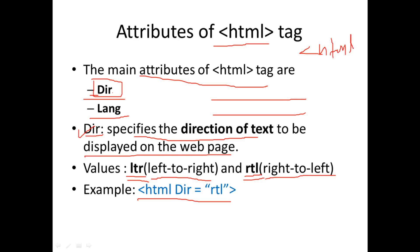In the HTML tag's angular bracket, we add the attribute. If the HTML attribute is dir, then we write dir equal to a value. For example, the value rtl means right to left.